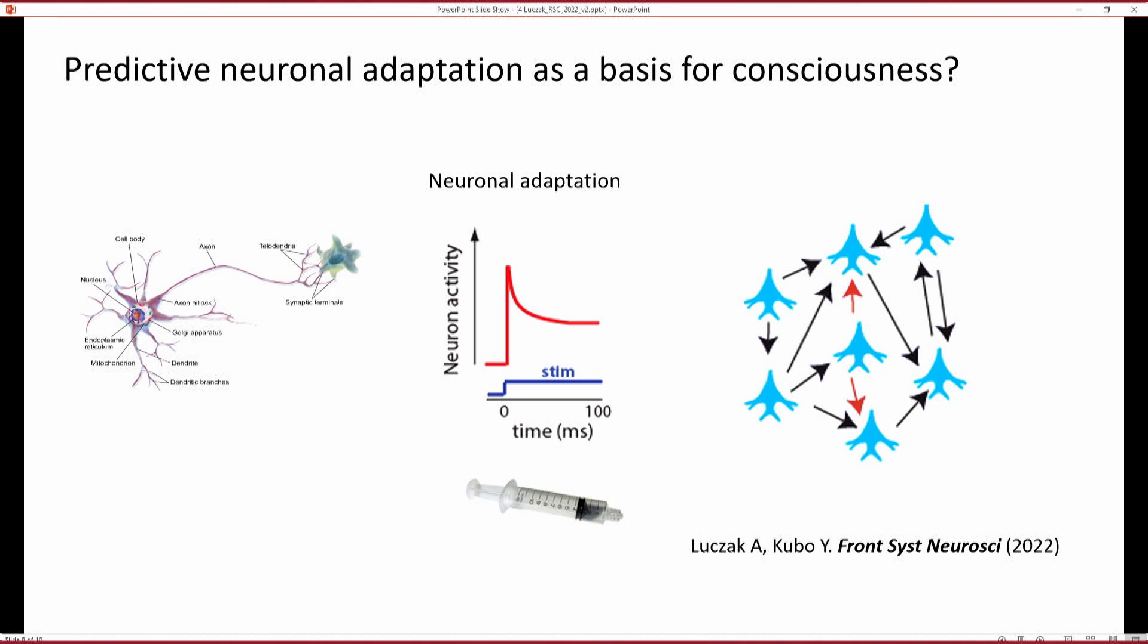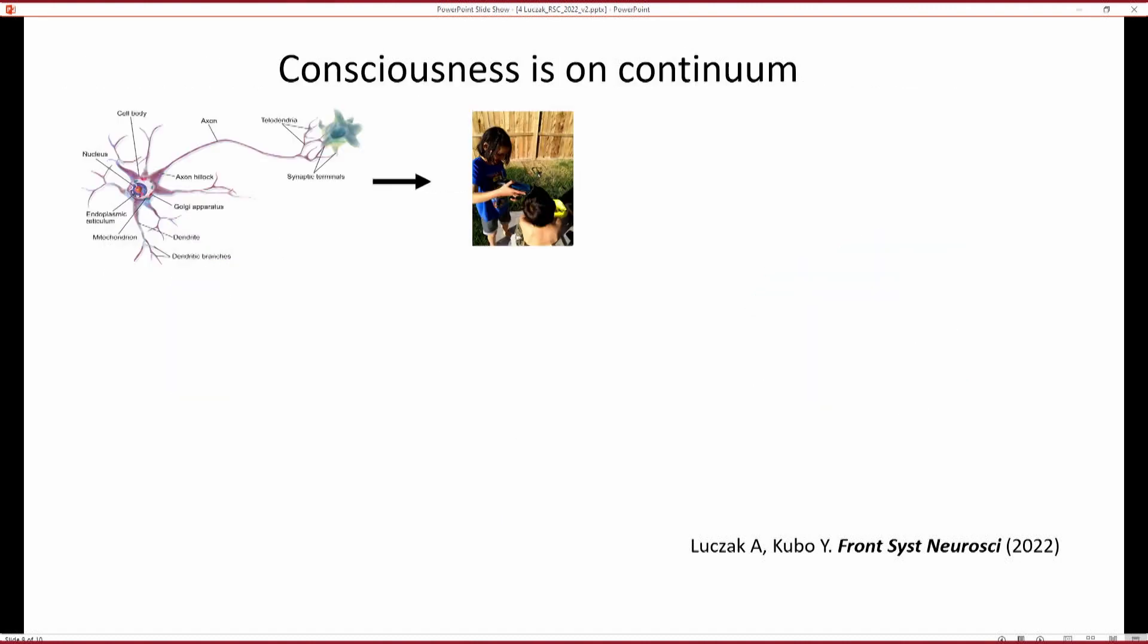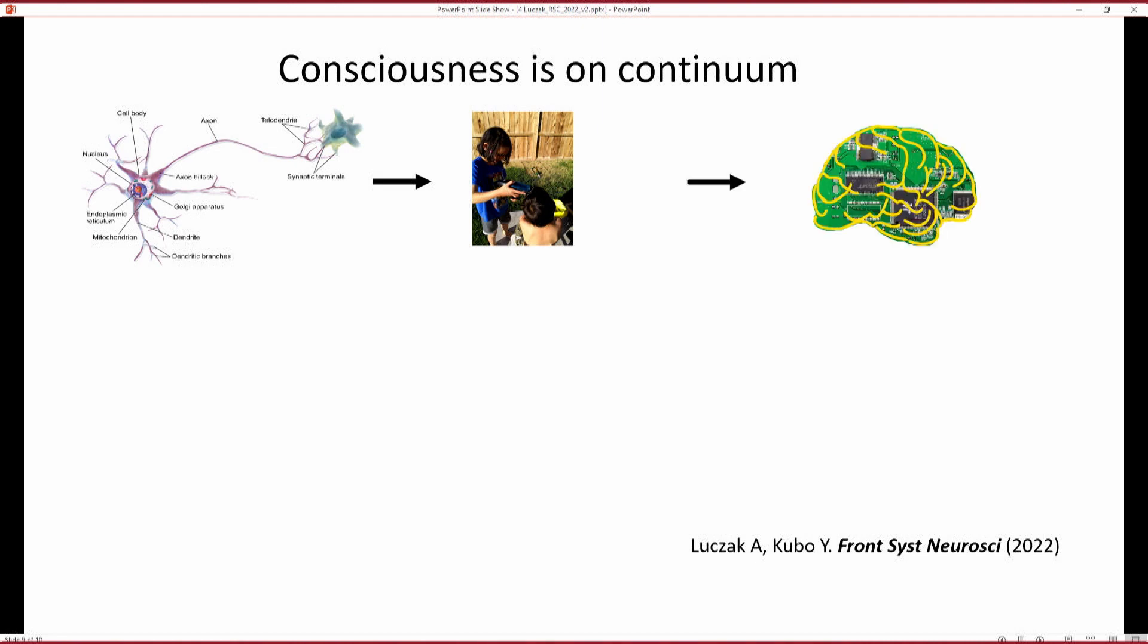For example, different anesthetics are working in different way, but all of them are affecting adaptations. So what I'm trying to say is that consciousness is on continuum that even single neurons, when they are trying to adjust surprise, they are having this basic consciousness. And if we can build computers, which are aware and can be surprised much more than we, they can be also much more conscious than we.